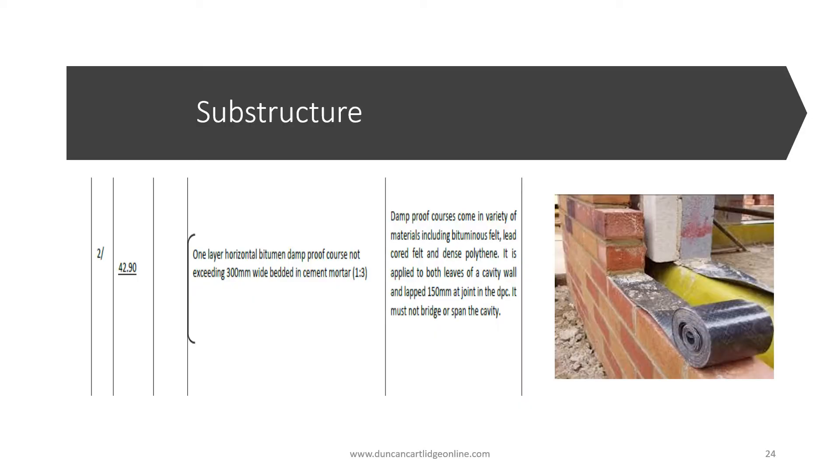A damp proof course, or DPC, is required for both skins or leaves of the external wall. Bitumen damp proof course is supplied in rolls approximately 30 meters long. At the junctions of the rolls, a damp proof course is lapped 150 millimeters. But when taking off quantities, this is not considered and the DPC is measured net. The estimator should add an allowance to cover for this.